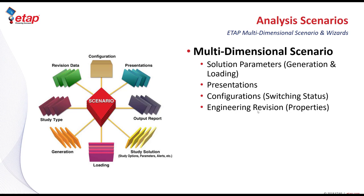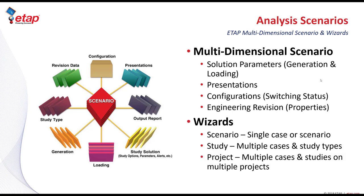The most basic engineering revision is called base, or the as-found or as-built system. But as an engineer is doing different analysis such as protection or arc flash, they may choose to create another revision called recommended. A recommended revision could hold all the relay settings based on an optimal or revised coordination study or based on an arc flash mitigation analysis. Once these multi-dimensional scenarios have been defined and created in ETAP, they can be executed singly or in a batch using various study results. The first study wizard in ETAP is called a scenario wizard, which allows the user to run a single case or scenario.